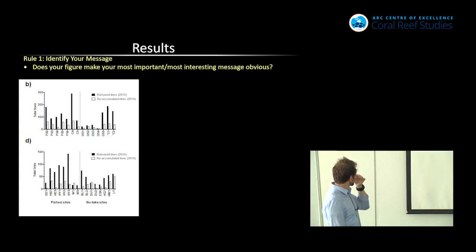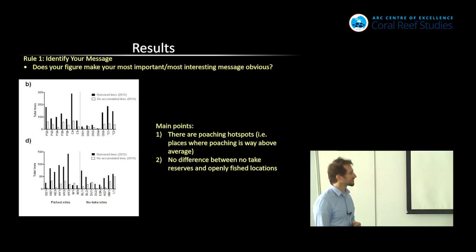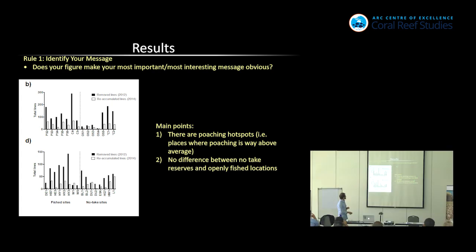So from the same paper, he brought me this slide here. And I'm sure it's okay until you realize what the main messages of this slide were. He said the two things that he was trying to communicate here is that there are poaching hotspots. Let me just explain what this is. He was going into these reefs and he was looking for discarded fishing gear. So this is fishing gear that's tangled on the reef, and typically it's got hooks and stuff on it so it hasn't floated in. It's pretty much evidence of poaching if you're in a marine reserve. But he wanted to compare how much discarded fishing gear there was in marine reserves that are not supposed to be fished with areas that are open to fishing. So his messages here were that there are poaching hotspots, there are places where poaching is way above average, and there's no difference between marine reserves and places that are openly fished.